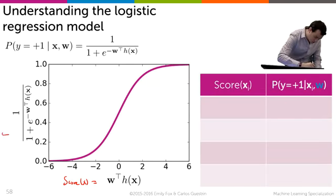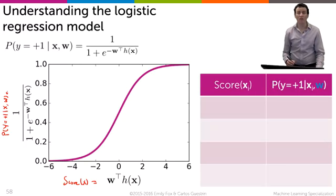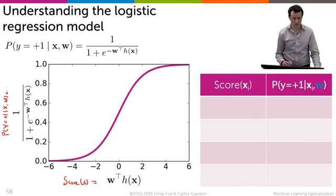And as output we have the probability that the label is plus 1 given the input x and the parameters w. That's the 1 over 1 plus e to the power of minus w transpose h of xi.